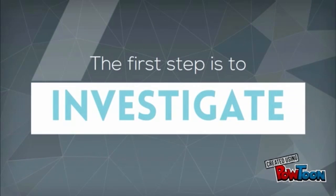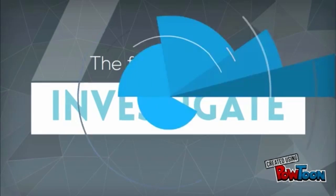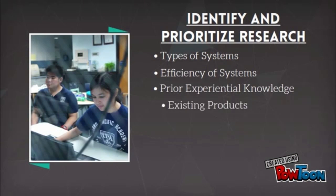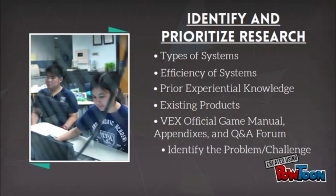The first step of the design cycle is to investigate. Identify and prioritize research, taking into account the following points, and identify the problem.